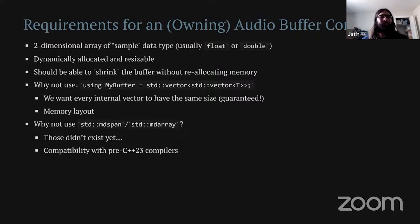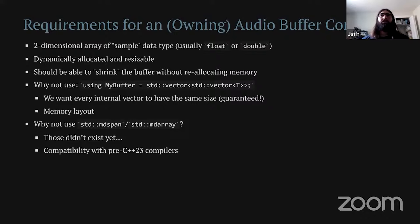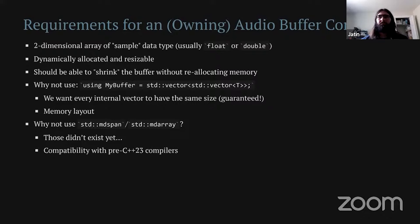If you're on the latest C++ standard library, you might ask why not use std::mdspan or std::mdarray. At the time those didn't really exist or I wasn't aware of them — they seem like really good candidates now. I'd be curious to hear experiences using mdspan or mdarray for audio buffers. mdspan is in C++23 and mdarray I think is going to be in C++26. I want to make sure my buffer type is compatible with at least C++17, so I wasn't quite ready to go for the very latest C++ features.